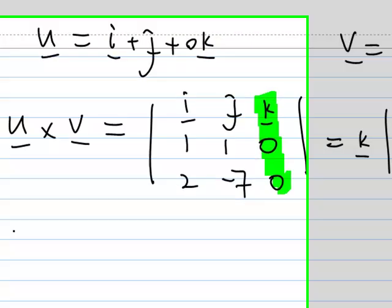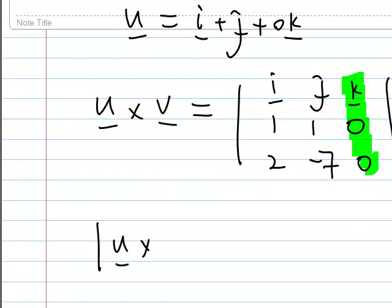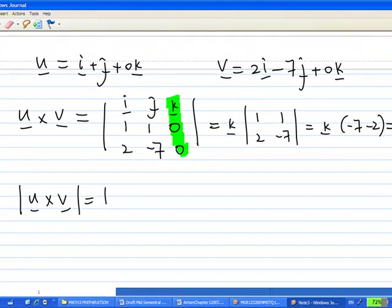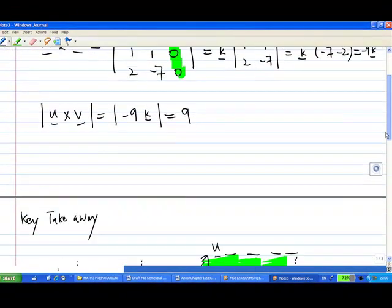So u cross v is -9k, and the length of u cross v is the length of -9k, which equals 9, as k is a unit vector. This gives you the area of the parallelogram.